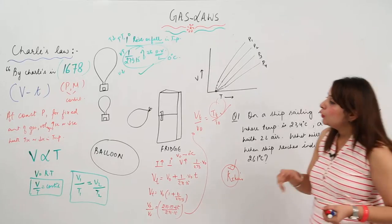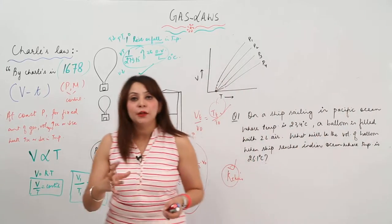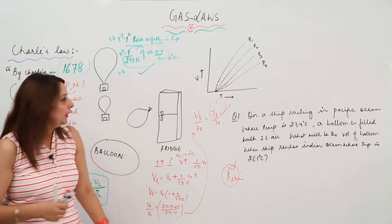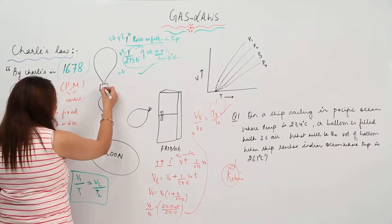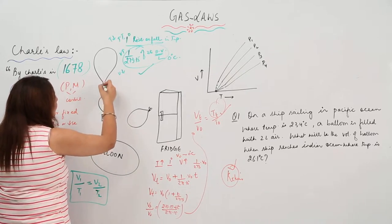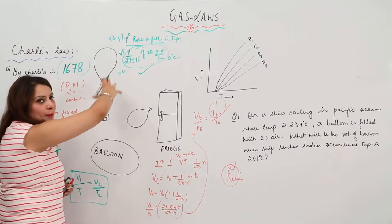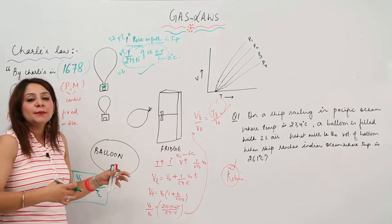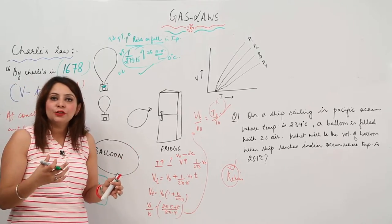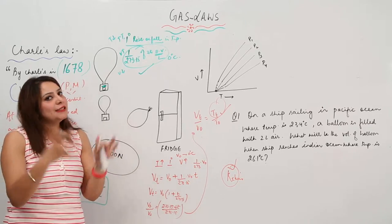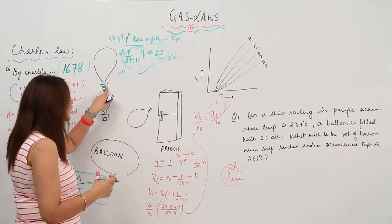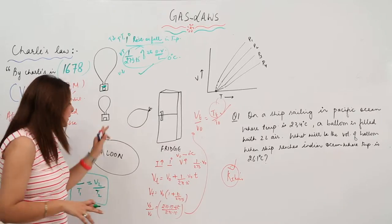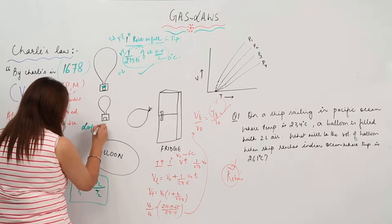You must have seen hot air balloons — they are actually based on Charles's Law. If you place a heater inside and start heating, the balloon starts blowing up as the air expands. If you cool it, the volume decreases. So on increasing temperature the volume of gas increases, and on decreasing temperature it decreases.